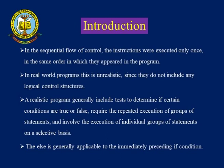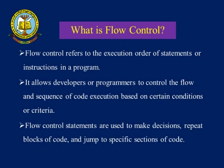A realistic program generally includes tests to determine if certain conditions are true or false. It requires repeated executions of groups of statements and involves execution of individual groups of statements on a selective basis. Flow control refers to the execution order of statements or instructions in a program. It allows developers or programmers to control the sequence of code execution based on certain conditions or criteria. These flow of control statements are used to make decisions.